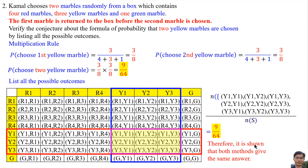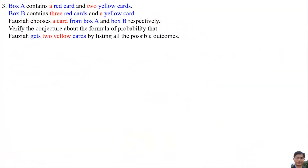Therefore, it is shown that both methods give the same answer. Number 3: Box A contains 1 red card and 2 yellow cards. Box B contains 3 red cards and 1 yellow card. Fawzia chooses a card from Box A and Box B respectively. Verify the conjecture about the formula of probability that Fawzia gets two yellow cards by listing all the possible outcomes.